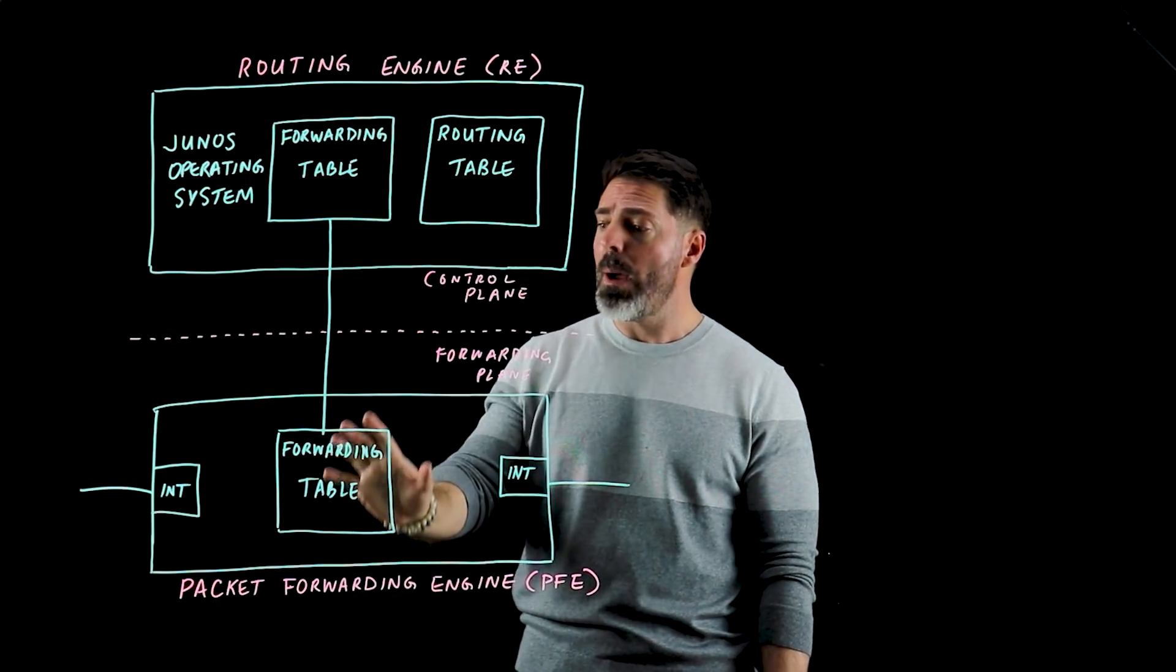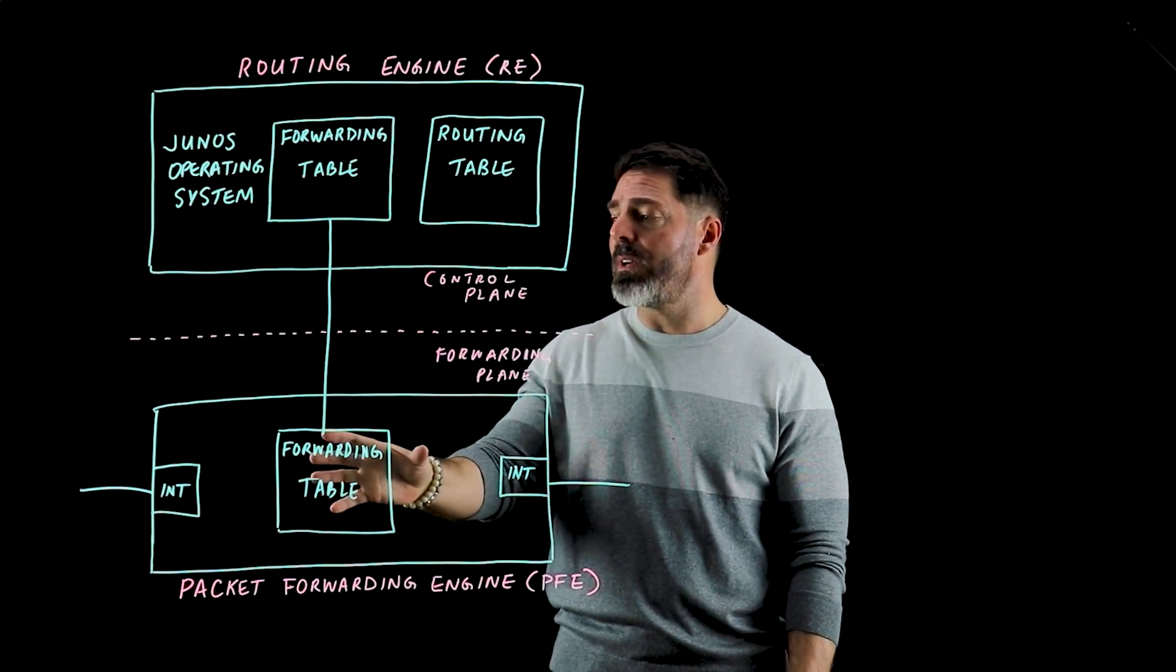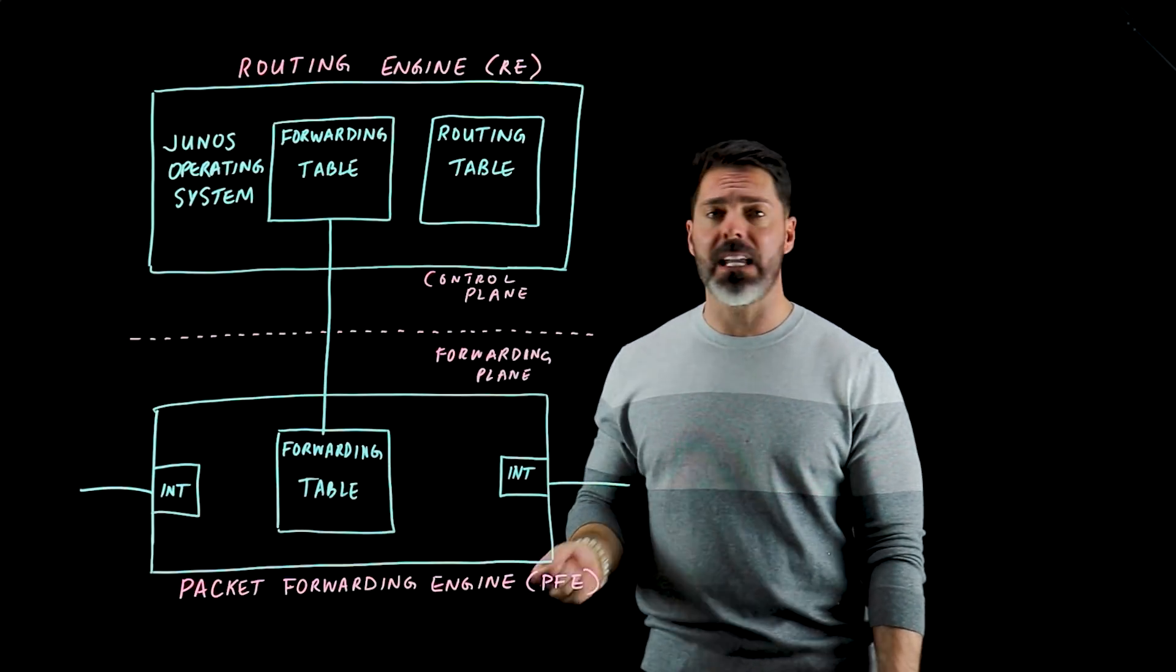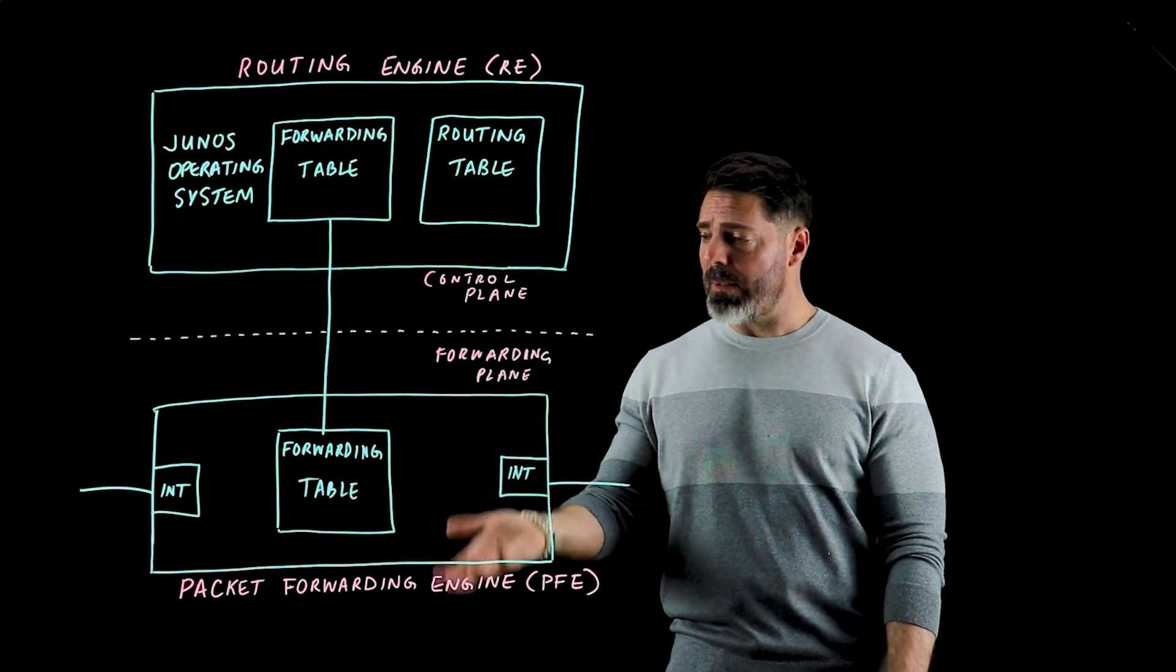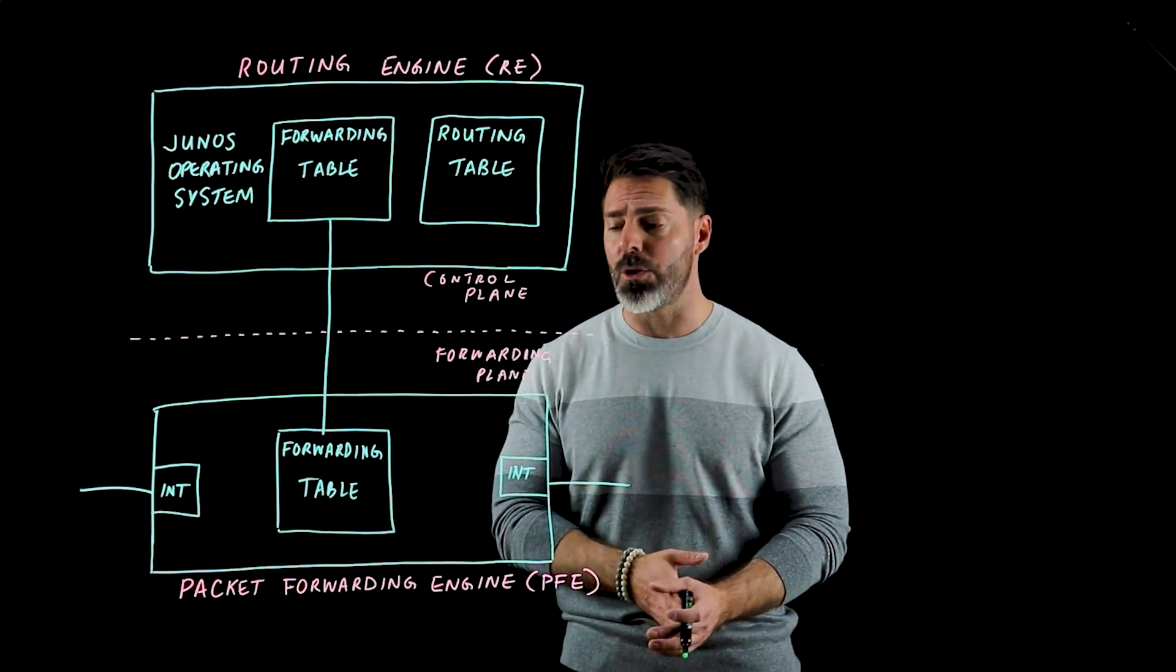So by pushing a copy of the best routes, the most active routes—what we call our forwarding table—into the packet forwarding engine, as packets come in they can be consulted against this forwarding table and a local decision is made as to where to forward that traffic to.